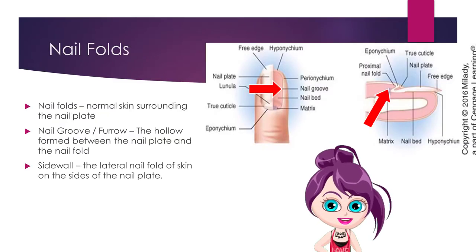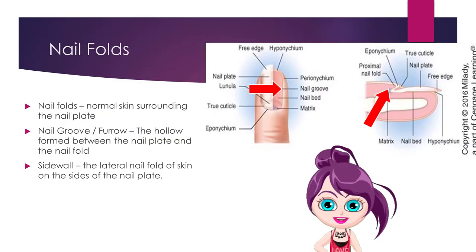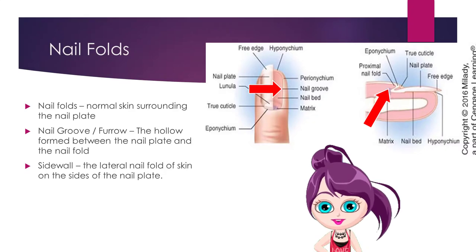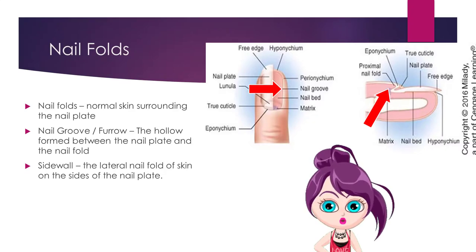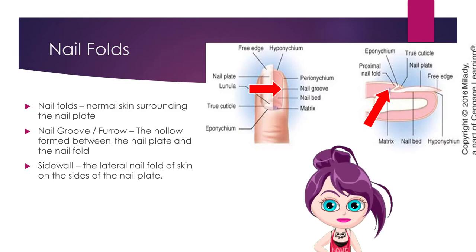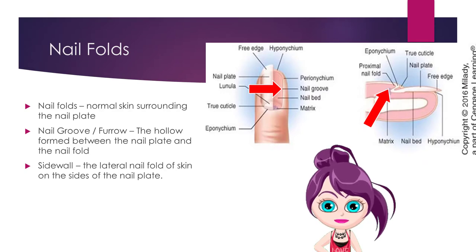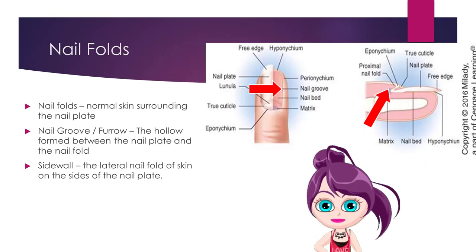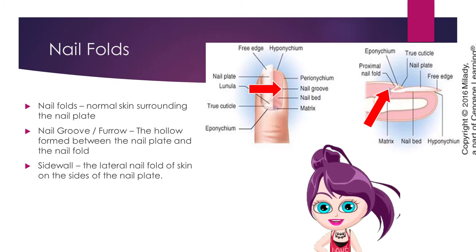Nail folds are the skin surrounding the nail plate. Nail folds create nail grooves or furrows, which are the hollowed-out portions between the nail plate and the nail fold. The nail folds then form sidewalls, which are the lateral nail folds of skin on the sides of the nail plate.